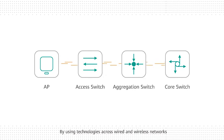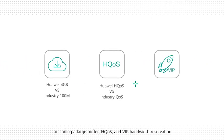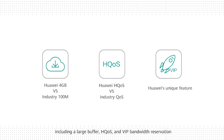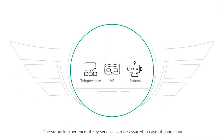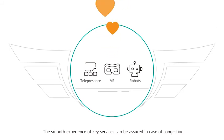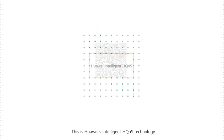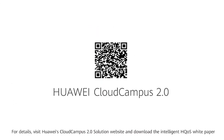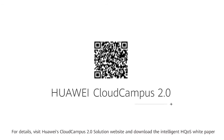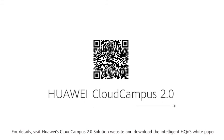By using technologies across wired and wireless networks — including a large buffer, HQoS, and VIP bandwidth reservation — the smooth experience of key services can be assured in case of congestion. This is Huawei's intelligent HQoS technology. For details, visit Huawei's Cloud Campus 2.0 solution website and download the intelligent HQoS whitepaper.